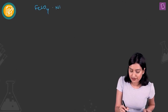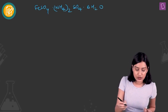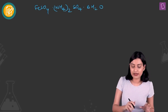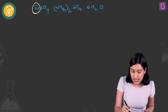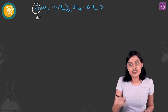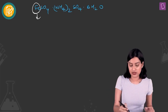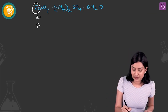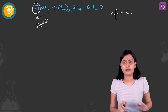In ferrous ammonium sulfate, the only ion involved in redox is the Fe²⁺ ion. Fe²⁺ becomes Fe³⁺, so the N-factor here is 1.